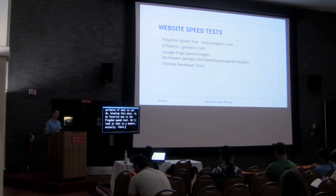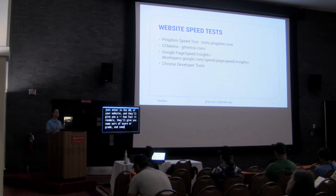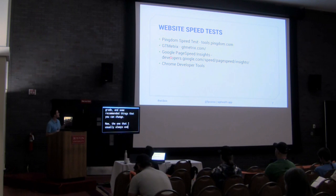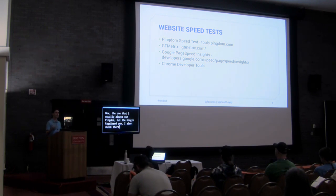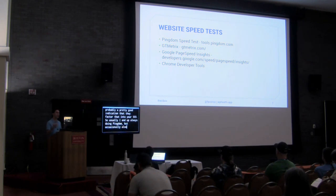Most tools do the same thing. With Pingdom, you just enter in the URL of your website and it gives you how fast it renders, some sort of score or grade, and recommended things you can change. I usually always use Pingdom, but I also check Google PageSpeed Insights because Google has the biggest search engine. What they flag is probably a good indication that it factors into your SEO.